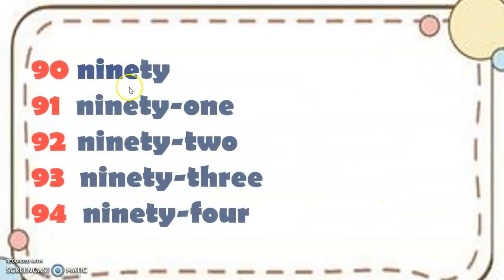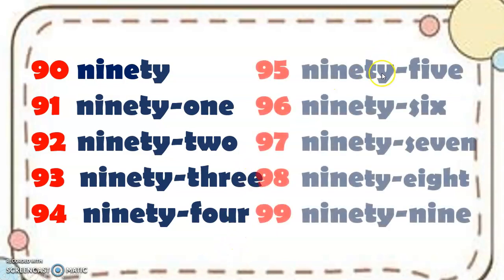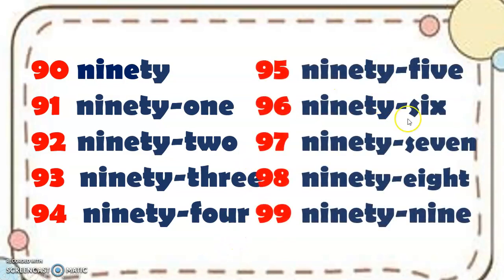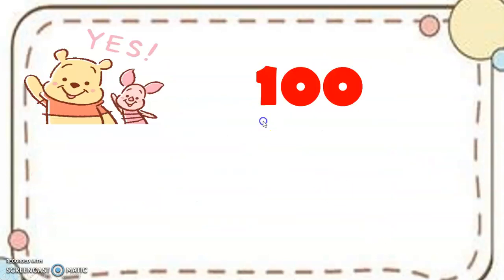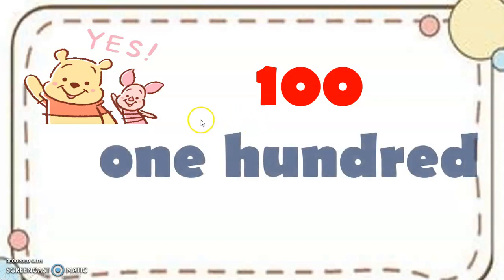And 90, 91, 92, 93, 94, 95, 96, 97, 98, and 99. And then, of course, 100. That's how we spell 100.